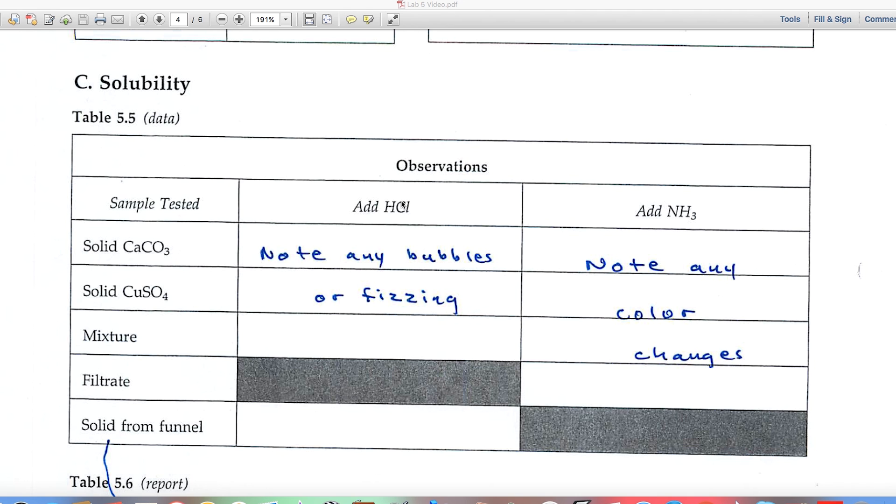Two chemical tests. We're going to add HCl and we'll add NH3. And here in the first case, note any bubbles or fizzing that occurs. One of these two is going to bubble or fizz, and be sure and record that. Well, the mixture then should bubble or fizz. And the big question is, does the solid from the funnel bubble or fizz? And you'll use that information to conclude which of these two the solid in the funnel is.